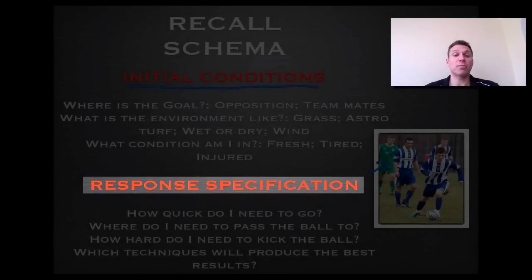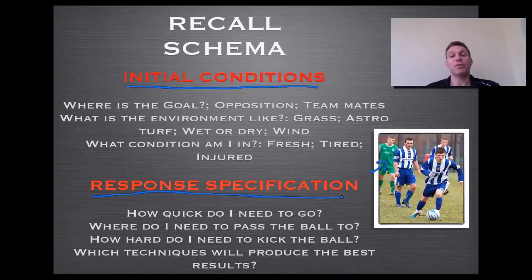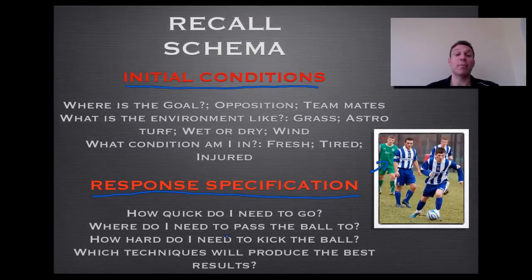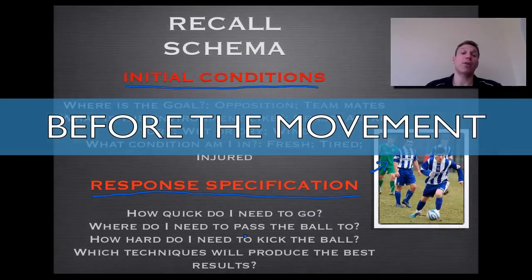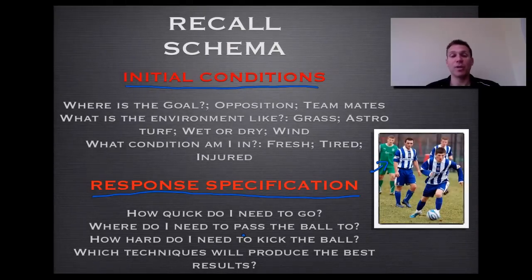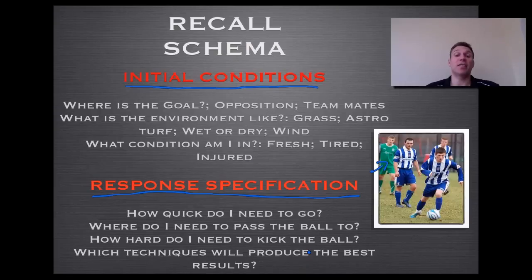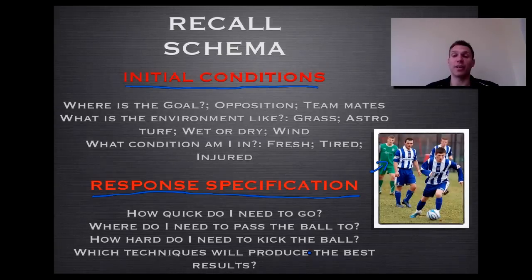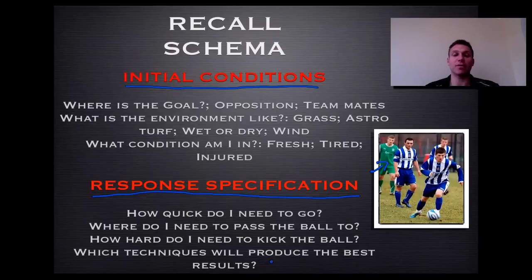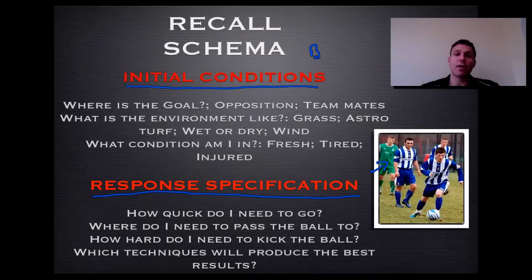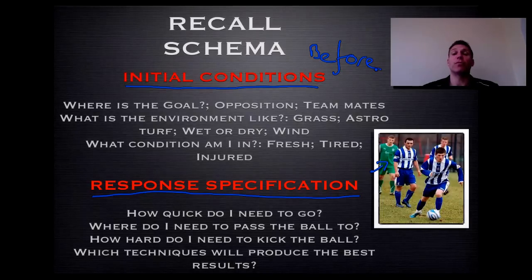The second part is response specification, which is dependent on all those initial conditions — remember, this is still happening before the movement. This includes how quickly you need to go, where you need to pass the ball, and what technique will produce the best results. Someone like Paul Scholes can use both feet and either side of his foot, but for most of us the technique that produces the best results might simply be using the inside of the foot over five yards. That response takes in all of these considerations, and recall schema happens before the movement is carried out.